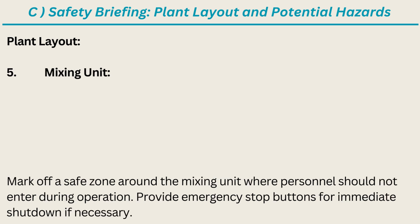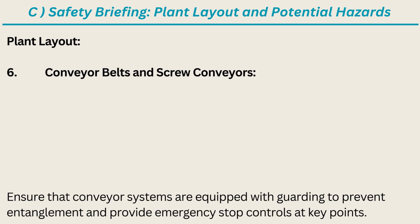5. Mixing Unit — mark off a safe zone around the mixing unit where personnel should not enter during operation. Provide emergency stop buttons for immediate shutdown if necessary. 6. Conveyor Belts and Screw Conveyors — ensure that conveyor systems are equipped with guarding to prevent entanglement and provide emergency stop controls at key points.